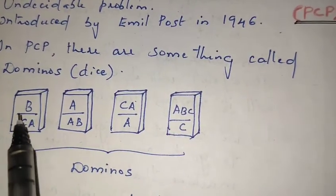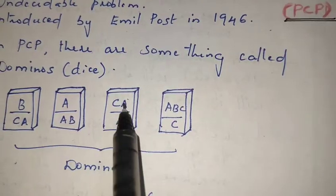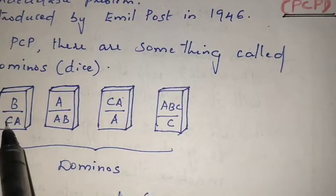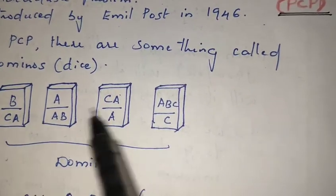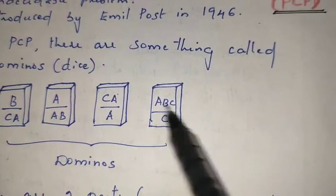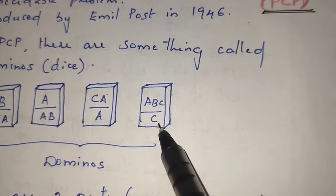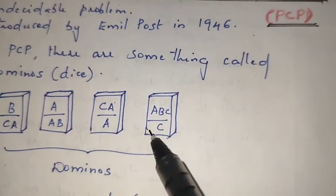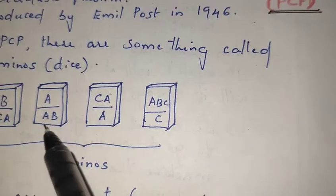Our task is to find a sequence of dominoes such that the top string and the bottom string are the same. For example, if I combine the top parts I get 'bacaabc', and if I combine the denominator parts I need to get the same string 'bacaabc'. But here the bottom gives 'caabac', so both are not equal.